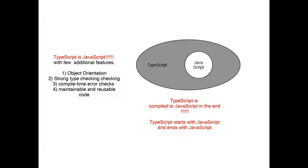These added advantages include that JavaScript was not object-oriented, but TypeScript is. JavaScript is not as maintainable and reusable, whereas TypeScript is. TypeScript also has strongly-typed checking, compile-time error checks, and other added advantages. But something special about this language is that at the end, TypeScript is compiled back to JavaScript only.